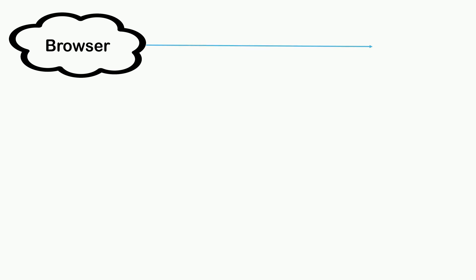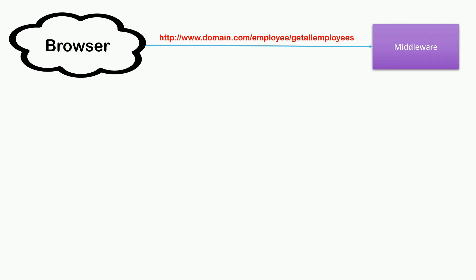Let's assume our application is capable of providing a list of all employees — a very basic application. The browser sends a request to our ASP.NET Core MVC application with a URL like www.anydomain.com/employee/GetAllEmployees. This request will go to our middleware. Because we are working on MVC, we need to configure our middleware to adhere to the MVC design pattern. How to do it, we will see later on practically.